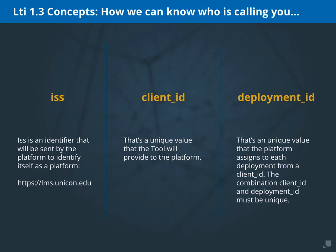So how do tools and platforms keep track of which is which across different deployment scenarios? In LTI 1.3, there are three identifiers to deal with this. The issuer identifies the platform — for example, lms.unicon.edu, or Blackboard, Canvas, Sakai, or Moodle. The client ID provides a unique identifier for the tool inside the platform. And the deployment ID is assigned uniquely by the platform to each deployment of the same tool. This combination of issuer, client ID, and deployment ID must be unique and allow the tool and platform to differentiate between each deployment.